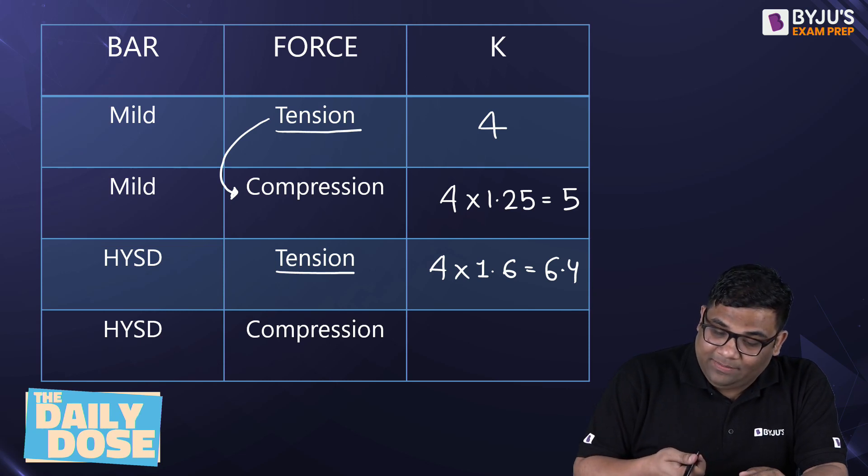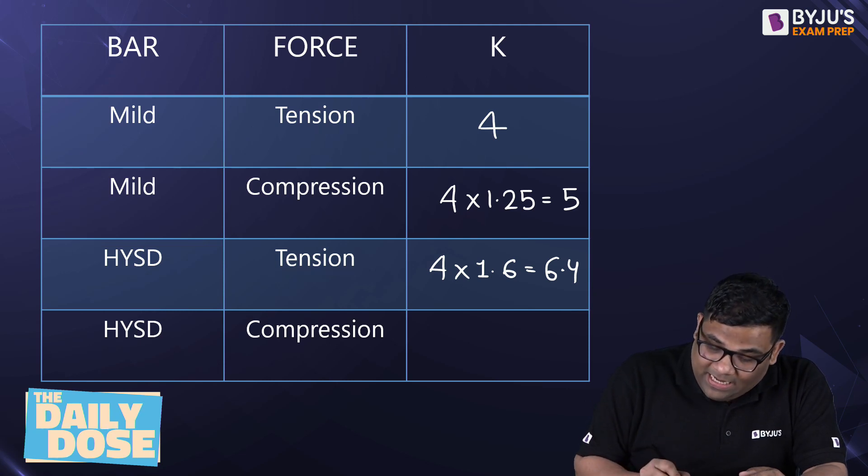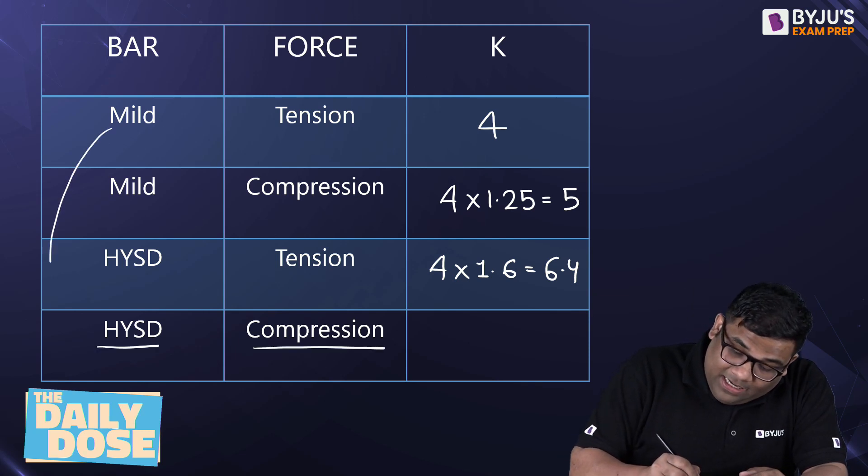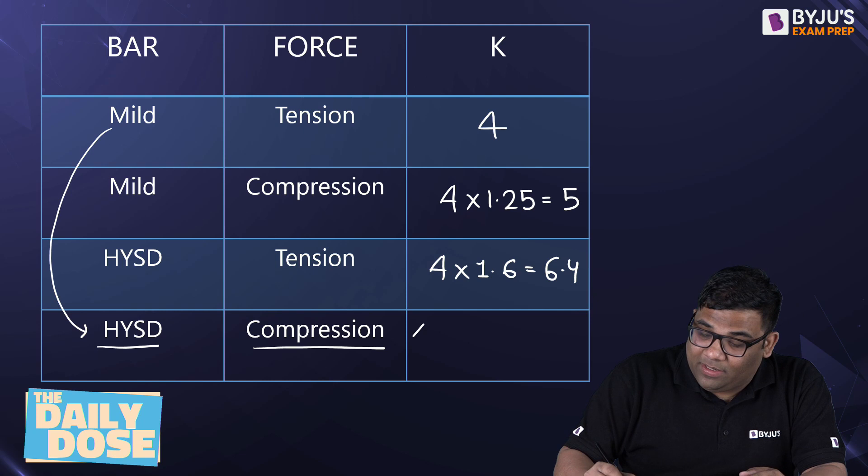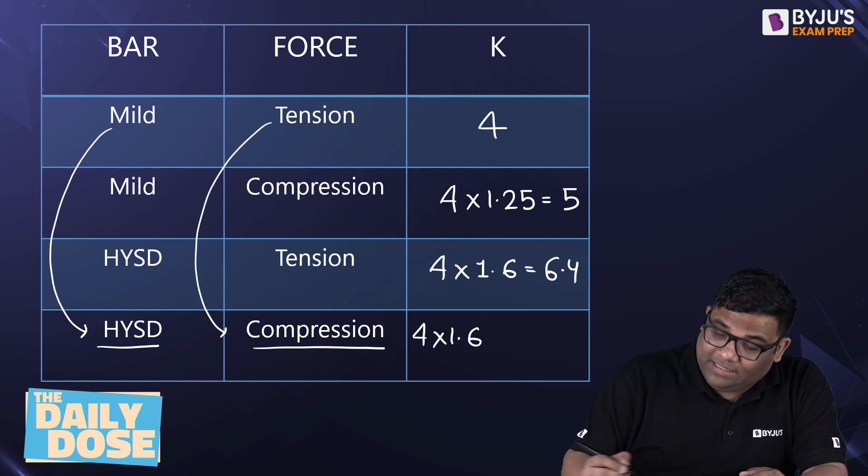And then you see here, when I am taking HYSD bar in compression, what will happen? From mild to HYSD there is increase of how much? 60%, right? And from tension to compression there is increase of 1.25%. So this makes it how much? 8.